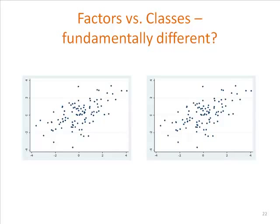Generally speaking, we've got an assumption to make about the latent variable. We can assume it is a continuous measure — you can have a little bit of it, or a lot of it, and anything in between — or we can assume it comes in chunks, and you're in that group, or that group, or that group. The question is: which do I choose? Surely these things are very different. But this example is trying to show you that actually, in some senses, these two approaches aren't fundamentally different from a statistical point of view.